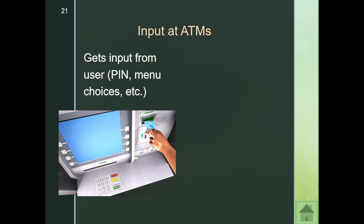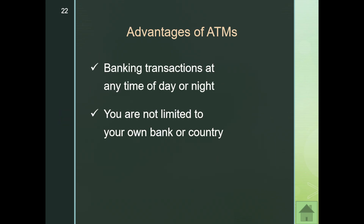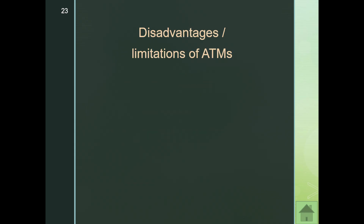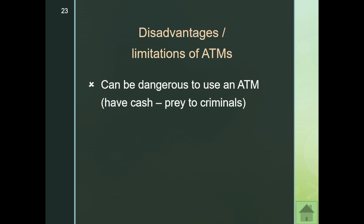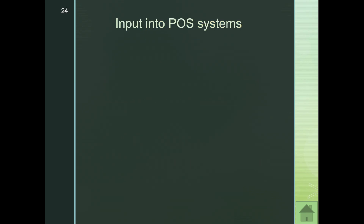ATMs receive input from the user through a PIN code, menu choices, card reader, network connection, touch screen, and cash counting. Advantages include banking any time of day or night and not being limited to your own bank, though you may be charged for that. Disadvantages include safety concerns — ATMs at night can be isolated and poorly lit — and the risk of card skimming devices installed by criminals.